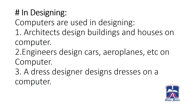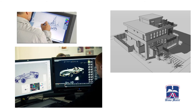In designing: Computers are used in designing. Architects design buildings and houses on computers. Engineers design cars, aeroplanes, etc. A dress designer designs dresses on a computer. These are some examples of how engineers use computers to design the structure of a car or the structure of a building.